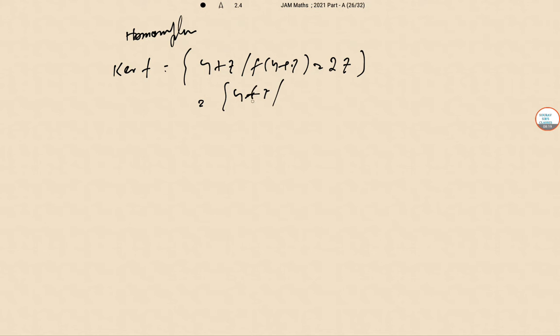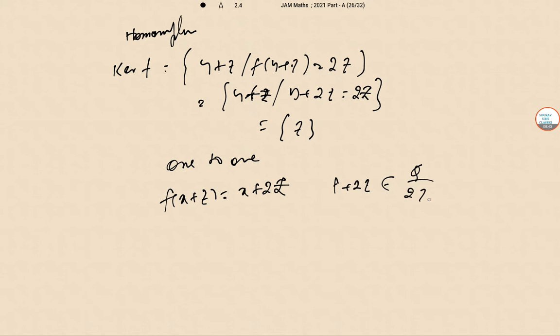Now, the kernel of F of Y plus Z, F of Y plus Z of 2Z, this is Y plus Z as 2Z equal to 2Z. So, this is actually giving us Z from the basic law. So, this is one to one. So, now F of X plus Z is X plus 2Z. Let T plus 2Z belongs to Q plus 2Z where T belongs to Q. F of T plus Z equal to T plus 2Z. So, this is an onto structure. So, hence this is isomorphic.